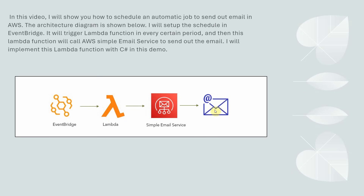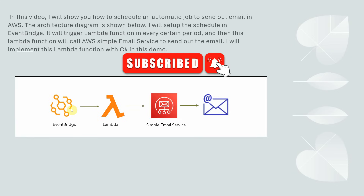I will implement this Lambda function with C Sharp in this demo. I will create this Lambda function first, and then set up the Simple Email Service. Finally, schedule it in AWS EventBridge. Before I start the demo, please subscribe to my channel — I appreciate that.